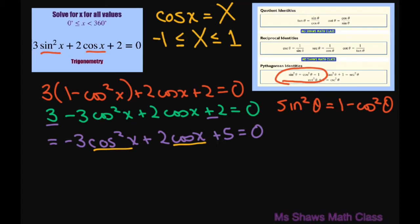And this can be factored as, let's see. Let's negate everything first. If we negate everything, we get 3 cosine squared of x. Let's write this as 3, let's substitute in our X, big X. So big X squared minus 2 big X minus 5 equals 0.